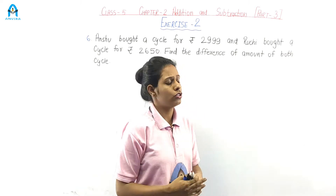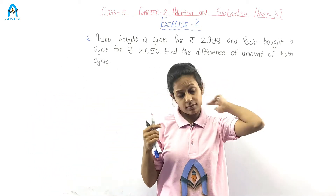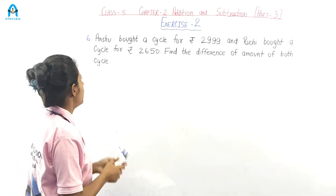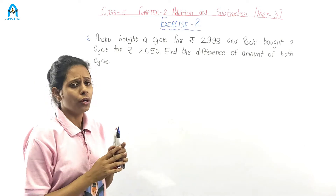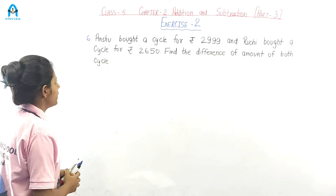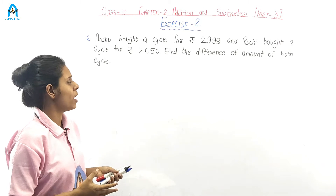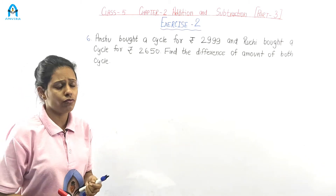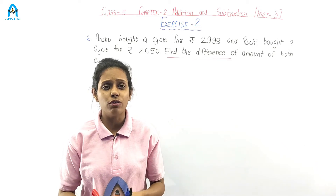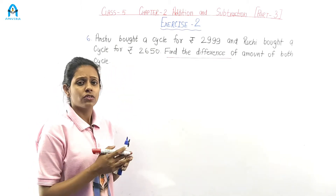Let's go to question number 6. Find the difference of the amount of both cycles. If somebody asks to find the difference, we have to subtract. So here we have two numbers, let's subtract them.